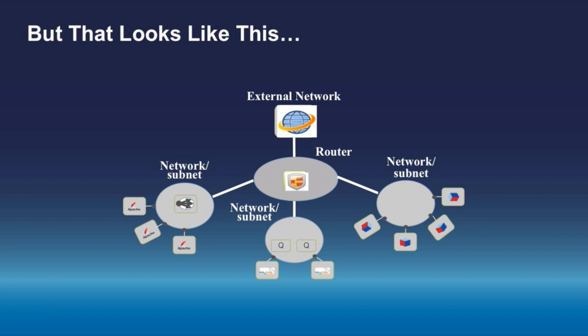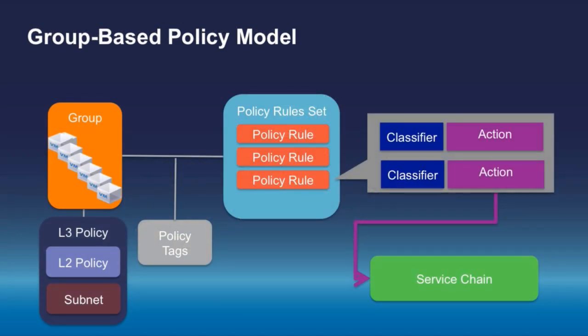This is what we're solving — we avoid having to go through that model. This is our OpenStack group based policy work group, and we give you a more abstract way to define the networking piece. In our group based policy model you define a group — endpoints could be a port, a virtual port, or a host — which are the end users' virtual or physical machines participating in a specific application group. For each group we define policies: layer 2, layer 3, VLAN, subnet, and what we want to do in terms of routing and switching.